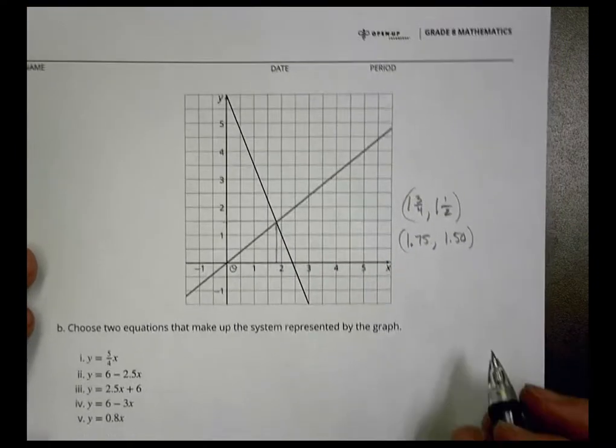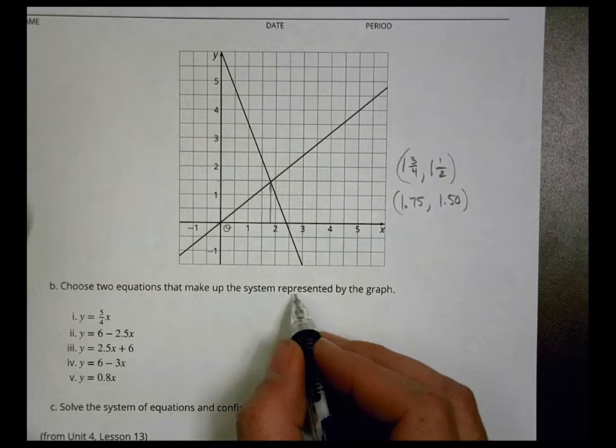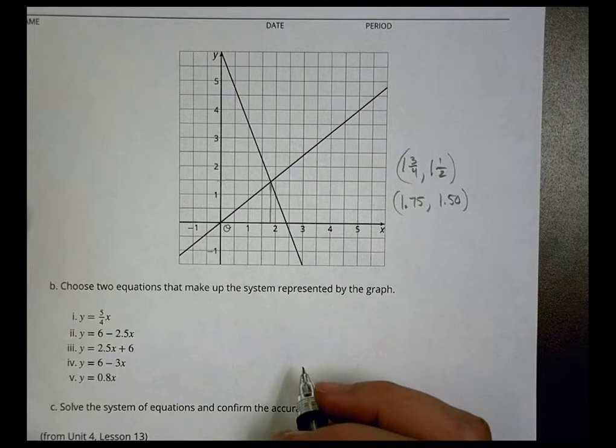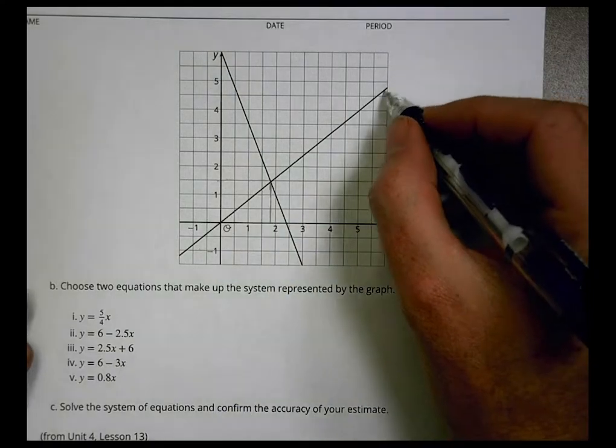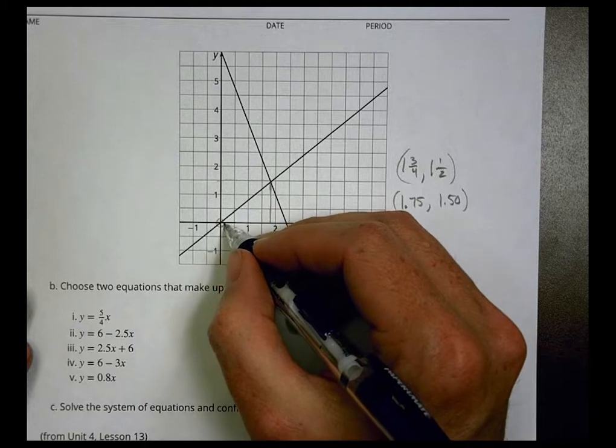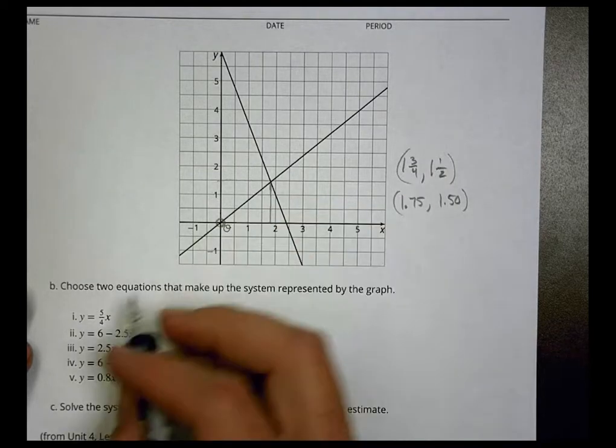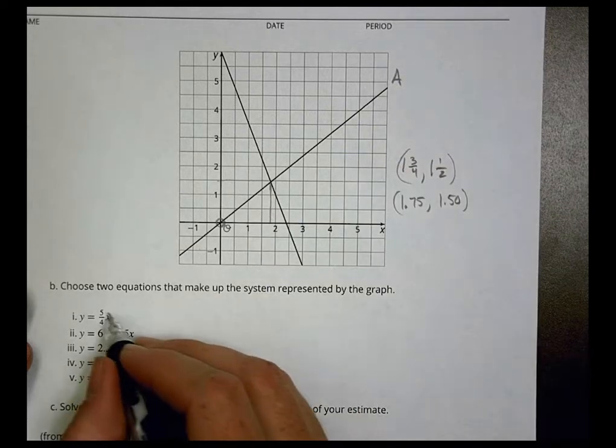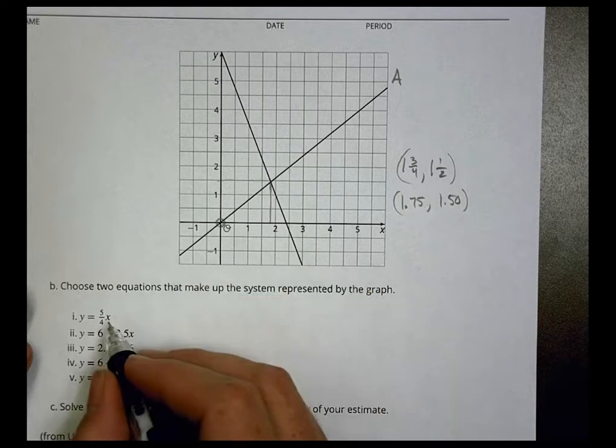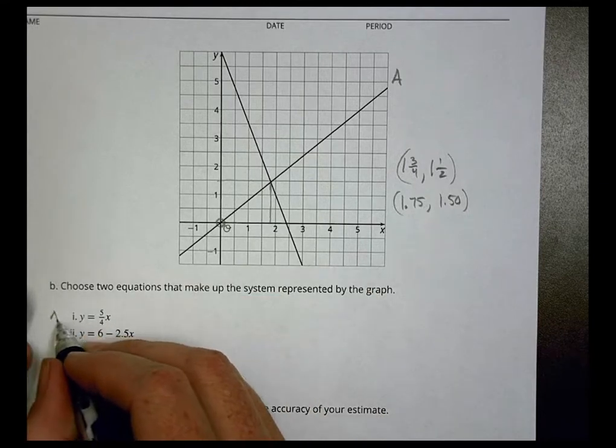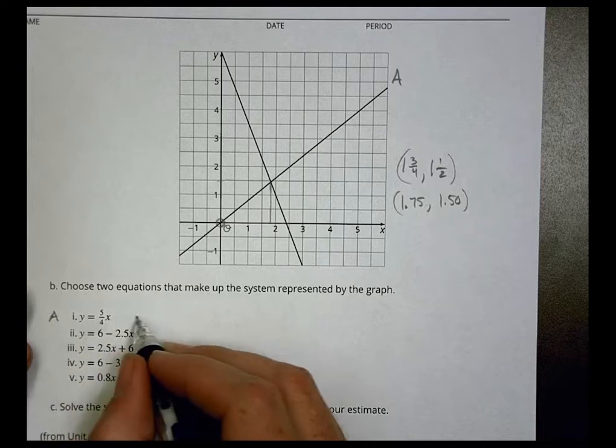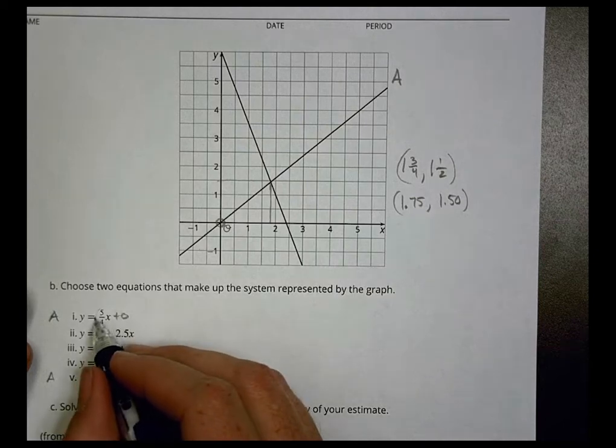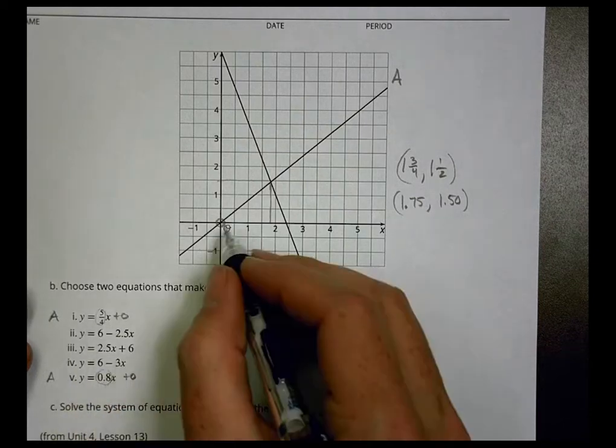It says then next to choose two equations that make up the system represented by the graph. So two equations do make those lines - which ones are they? For the first one here we notice that this one here has a y-intercept at the origin which is zero. If we call this one choice A, line A, if it has a y-intercept at zero we might be able to consider it. For example, this one has a no y-intercept, there's plus zero right, and this one here is also a plus zero. So the question would be which one of these has a slope that matches that line.